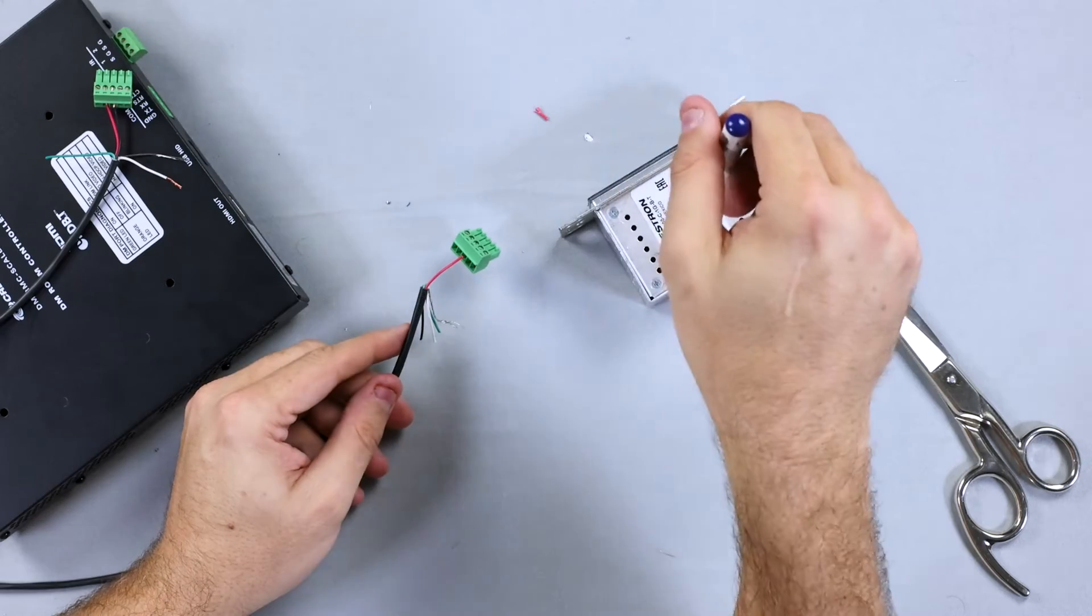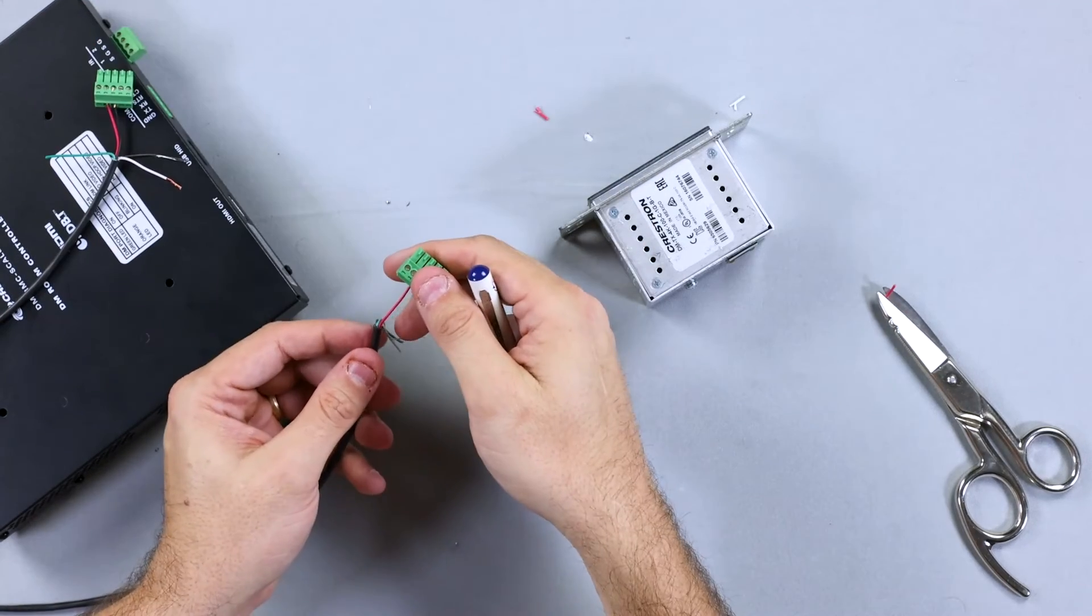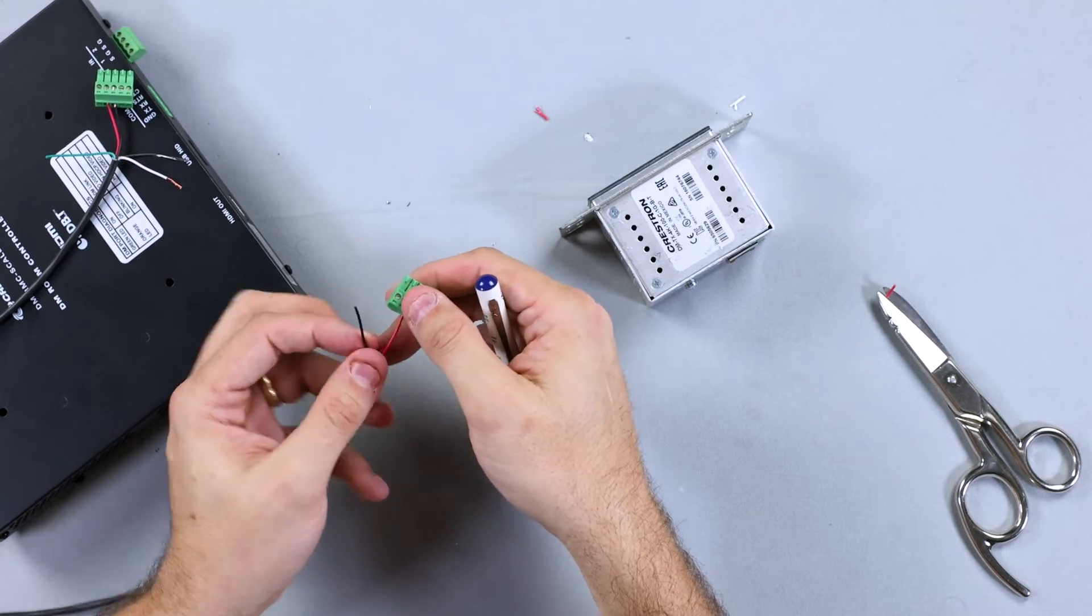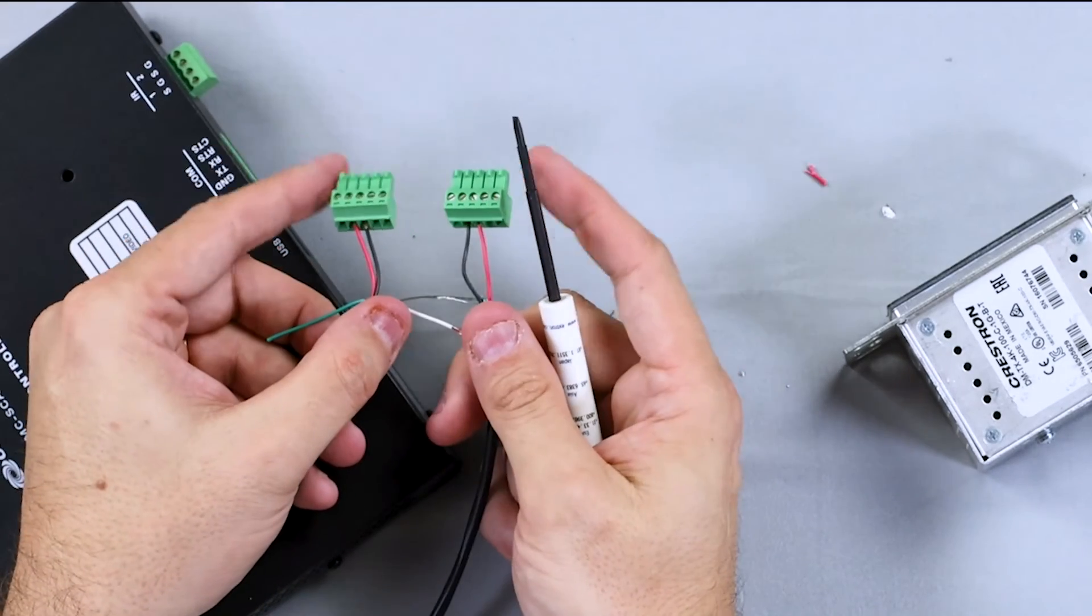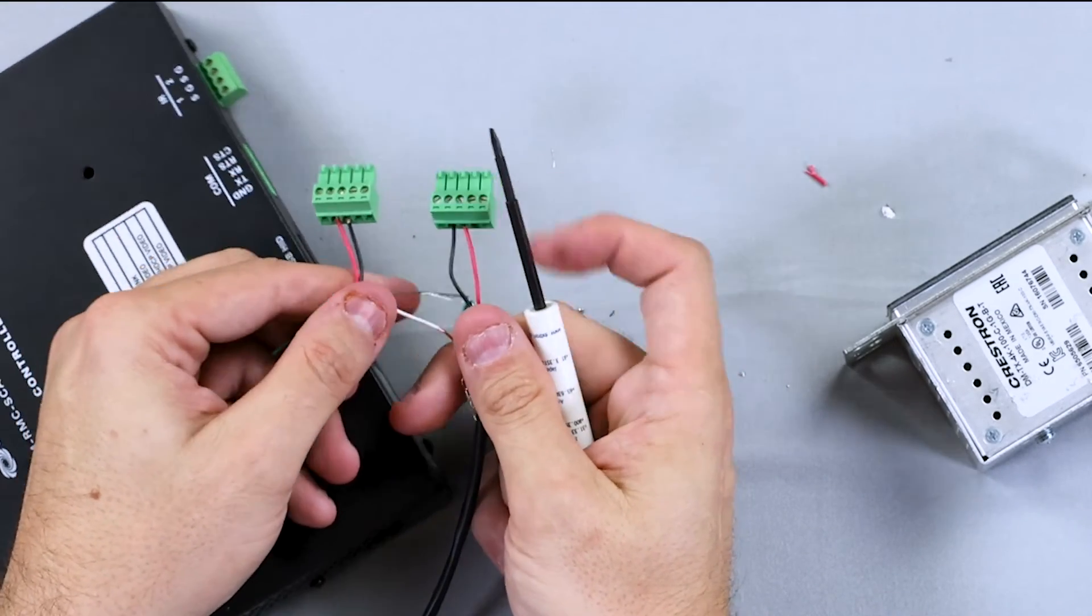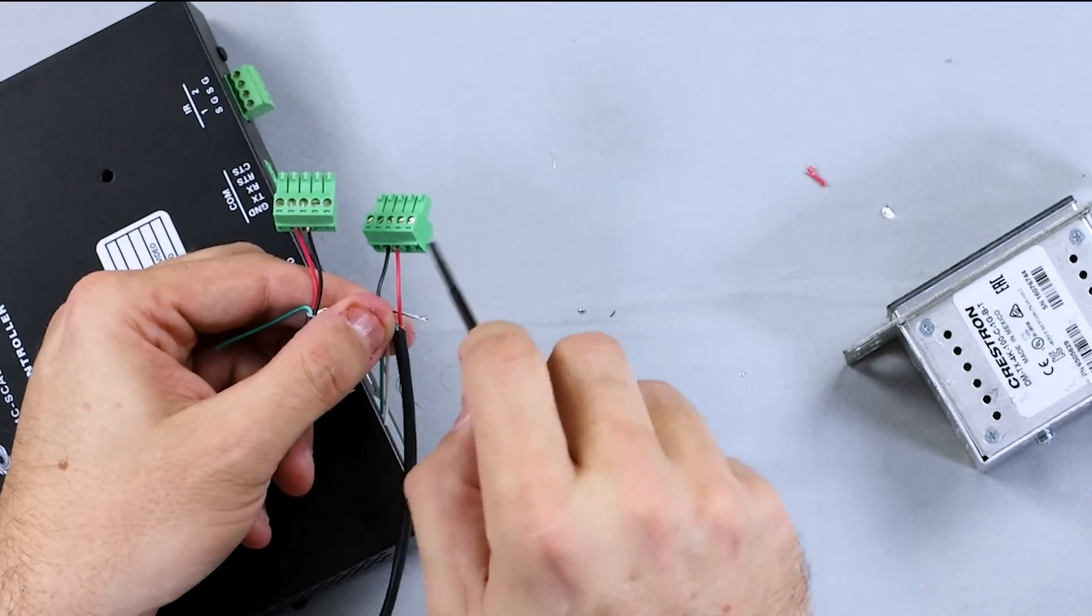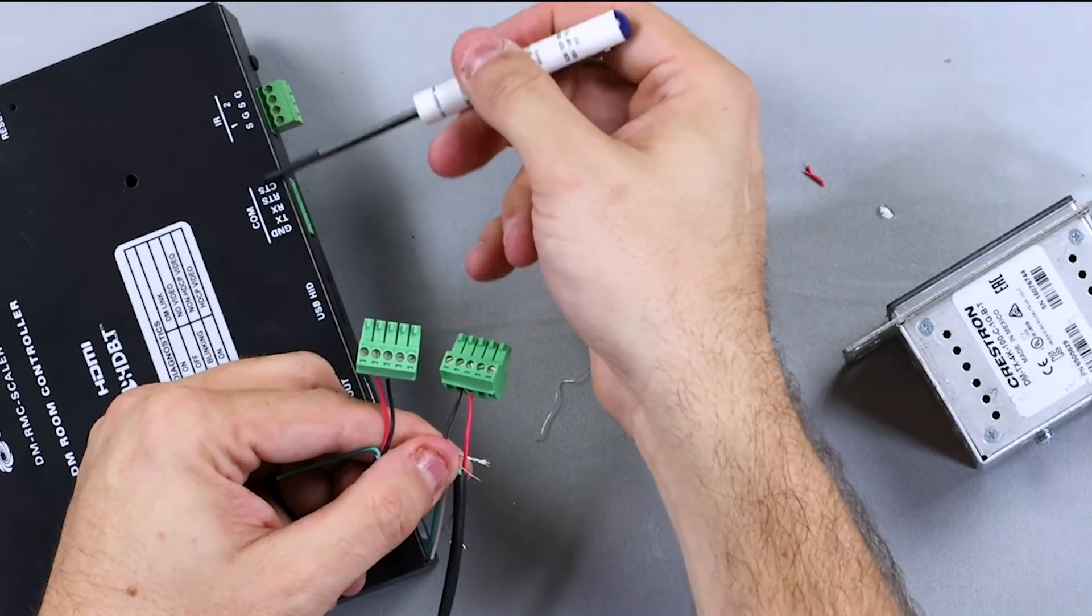But as we mentioned before, transmit to receive, so that signal actually crosses. So now our black is going to be on our number two. If I'm looking down from above and not paying attention, you risk not getting a good signal flow if you're not paying attention to what the device says.